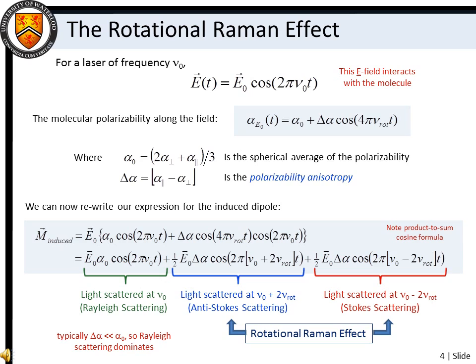Note that because the spherical average of the polarizability is in general much larger than the polarizability anisotropy, Rayleigh scattering is the dominant scattering process.